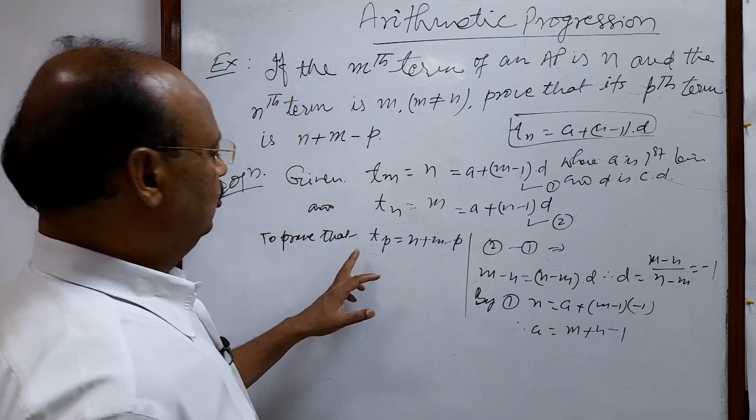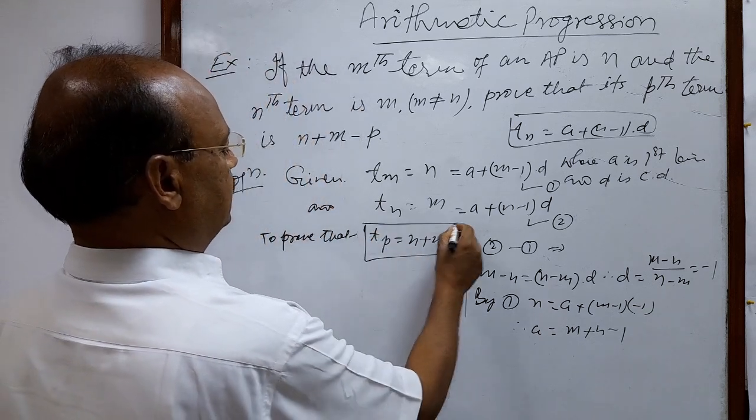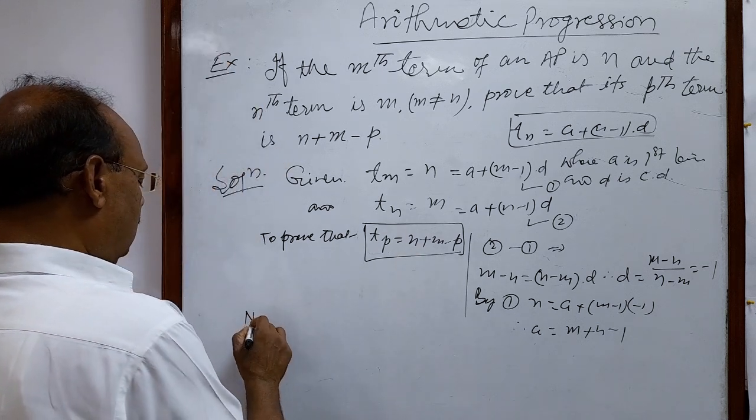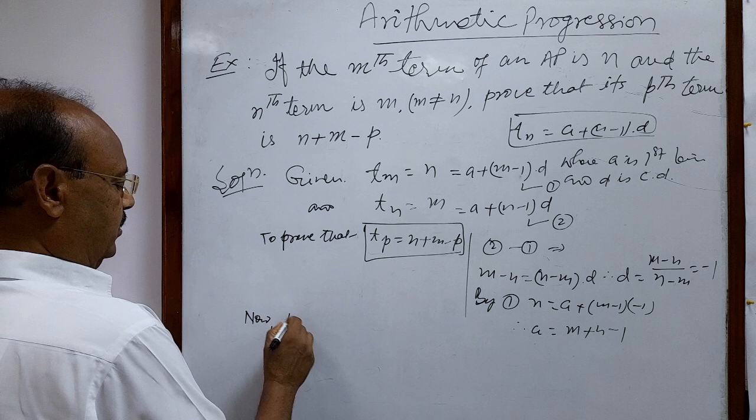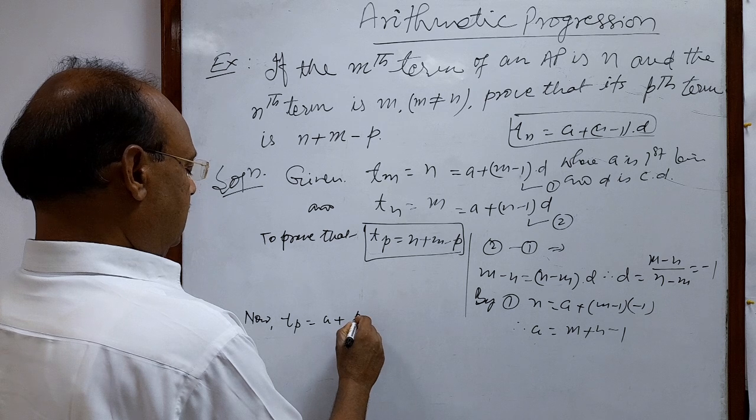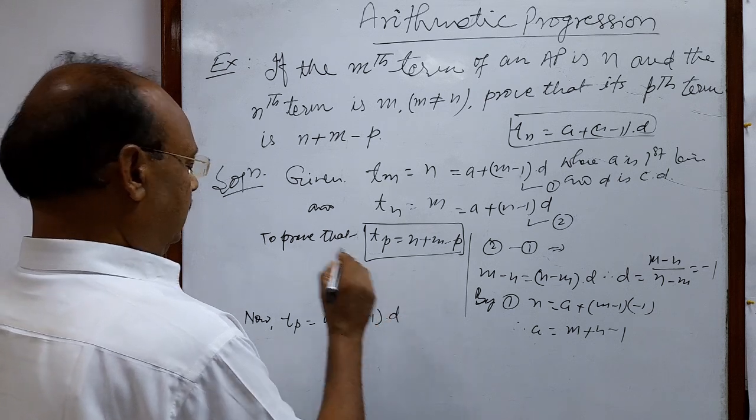Now we have to prove that Tp equals n plus m minus p. So let us find the pth term Tp. By the formula, this is a plus (p minus 1) times d.